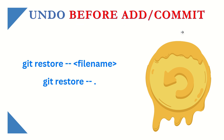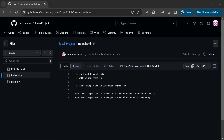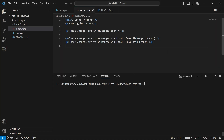First, before adding and before committing — we have just saved the code. How can we undo that? We have a very simple command: git restore and then the file name. If we want to undo multiple files, we can say git restore -- dot. Let's do it practically.